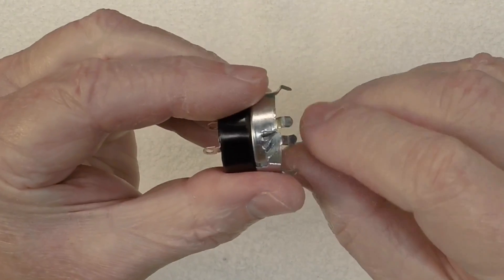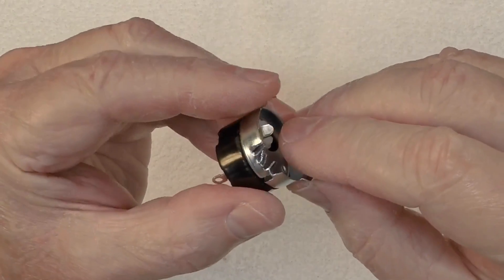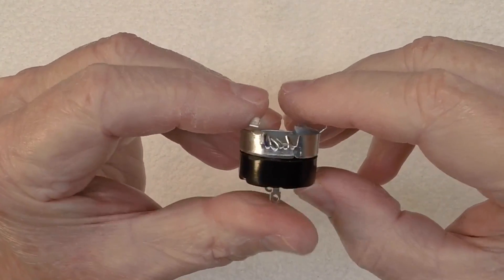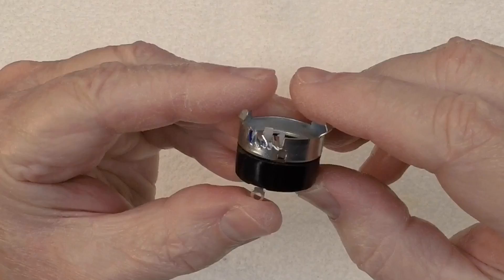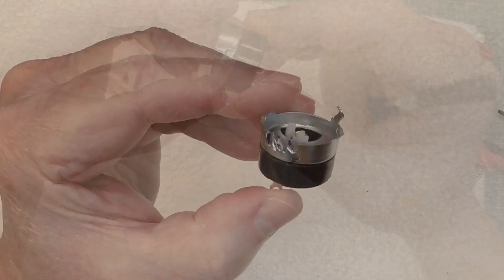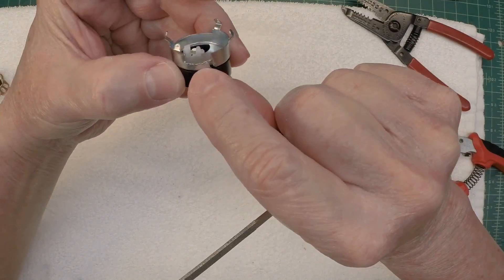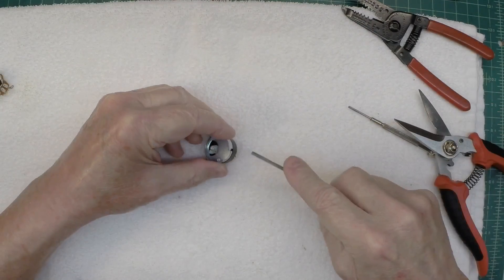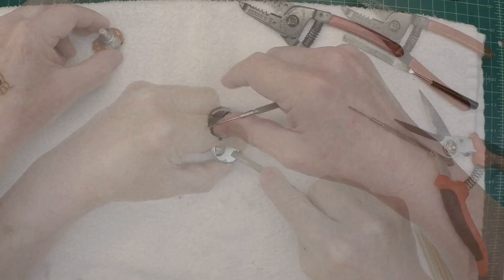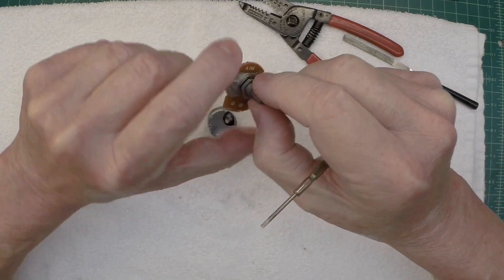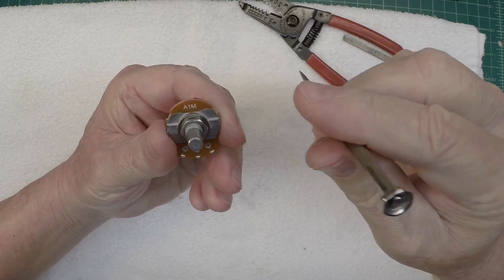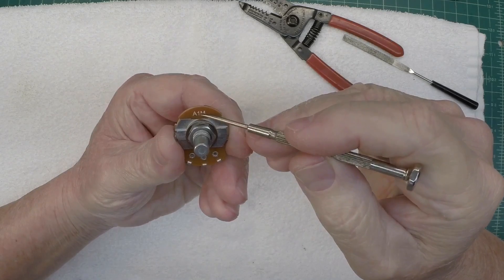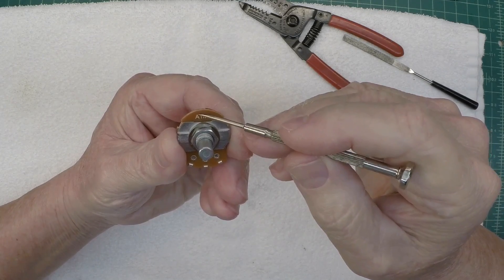All right, let me clean these edges up here and get a small file here. Make sure that this is what we're looking for. I've got those bent back where you can see and removed. So let me go ahead and do some filing here.